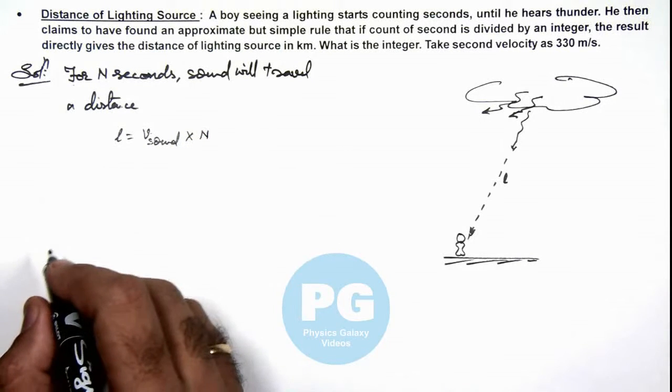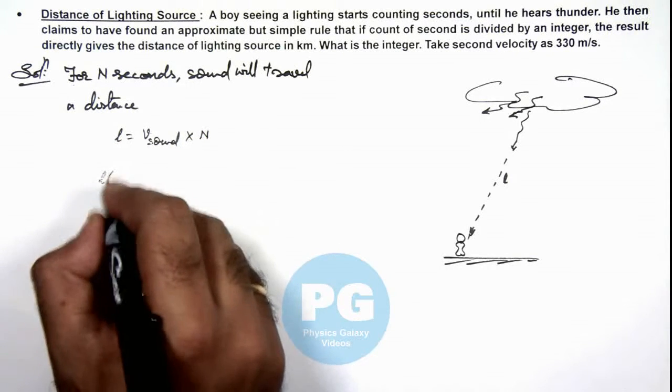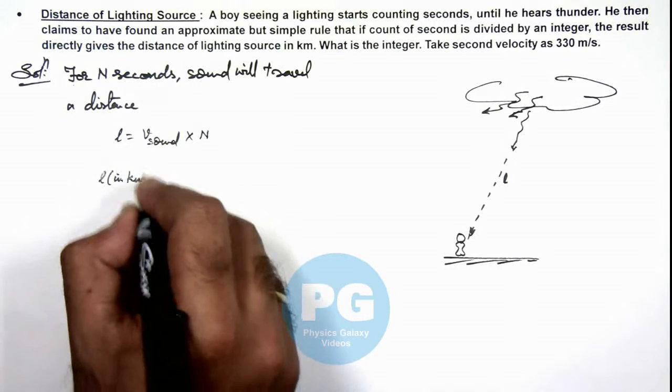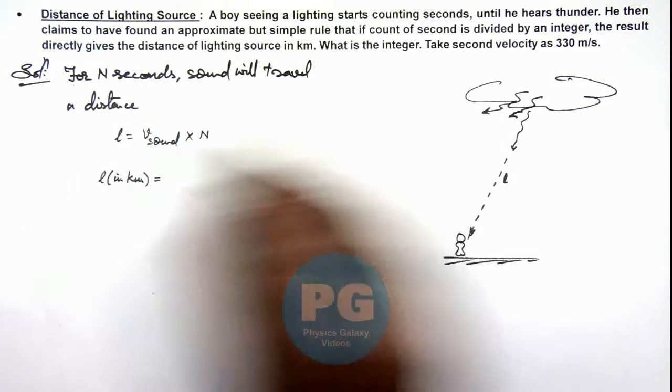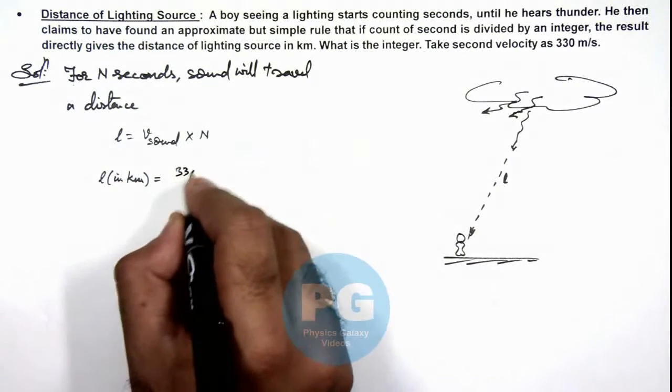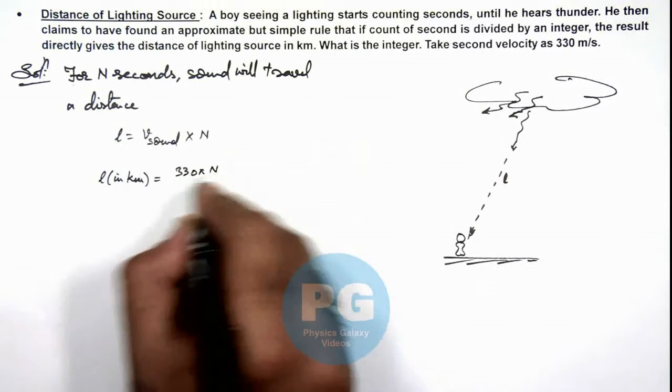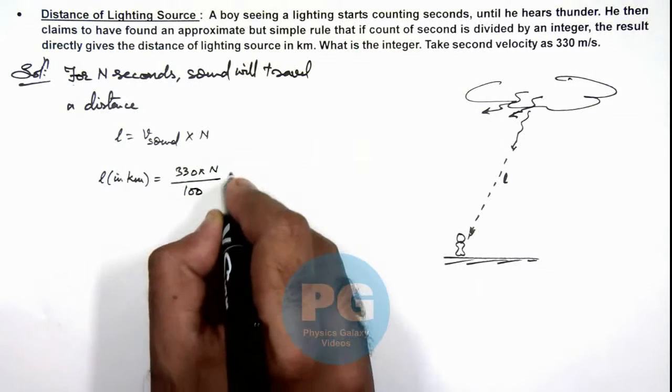So now in this situation, if L is taken to be in kilometers, then we can write sound velocity is 330 multiplied by N divided by 1000. This is N kilometers.